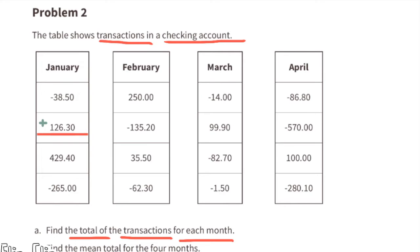Part a: Find the total of transactions for each month. Let's start with January. They begin January with a withdrawal of $38.50, they put into the bank $126.30, that's a difference of $87.80. We can add that to the positive $429.40, and that new balance is $517.20.